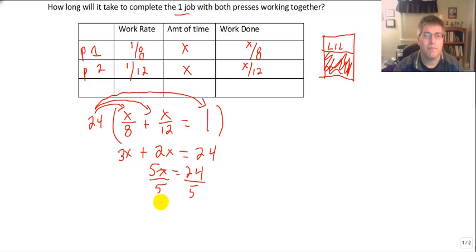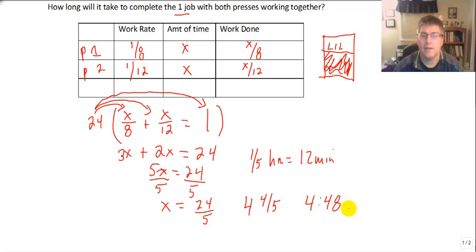Divide both sides by 5. We get x equals 24 fifths. And 24 fifths, we know that's 4 and 4 fifths. But we want to know how long it will take. We don't talk about 4 fifths of an hour. Hopefully, we know that 1 fifth of an hour equals 12 minutes. So 4 and 4 fifths hours is 4 hours and 48 minutes. And that is our final answer. 4 hours and 48 minutes.